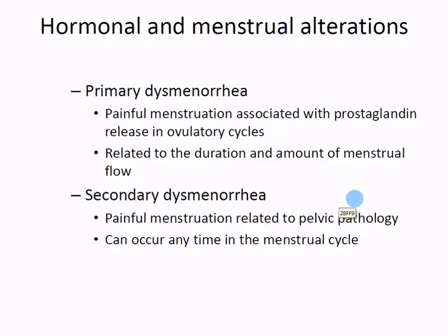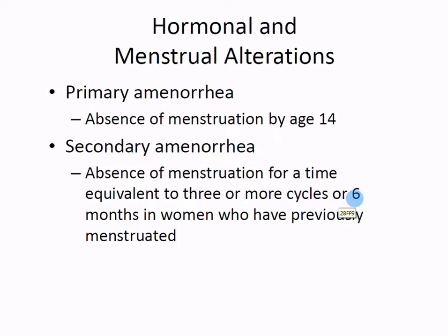Secondary dysmenorrhea is also painful but related to some other pathology, like an infection or irritation - something not specifically the uterus itself. It could be a uterine infection, a vaginal infection, or an abdominal cavity infection irritating the uterine lining. It just happens to occur around the same time as menstruation.